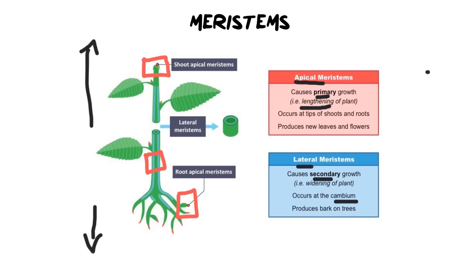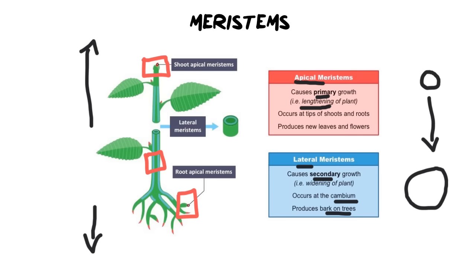One year the width of your stem might be a certain size, but due to lateral meristems two or three years later it could be much wider, because the lateral meristems have grown in thickness. The second thing lateral meristems do is provide bark on trees, which makes sense because every time the width of your stem increases you're going to have to add on a new layer of bark.